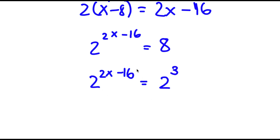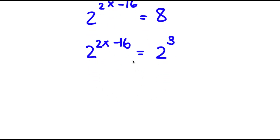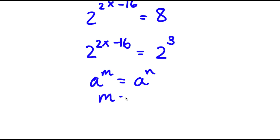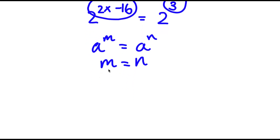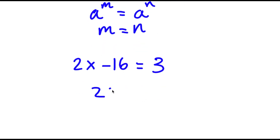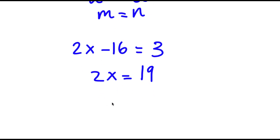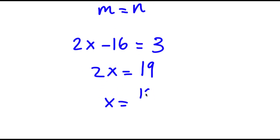Since the bases are equal, the exponents must be equal: 2x minus 16 equals 3. So 2x equals 19, and x equals 19 over 2.